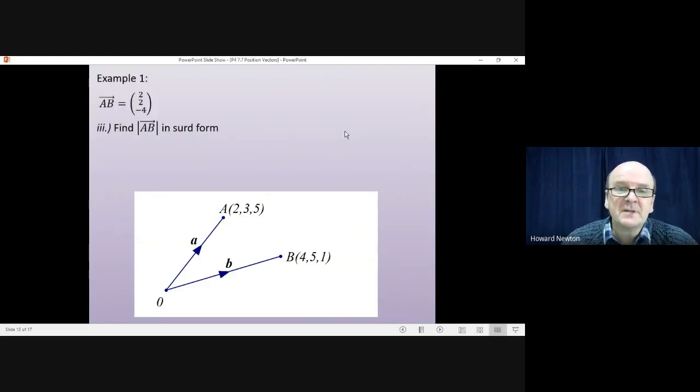And then lastly, we were asked to find the magnitude of AB, giving our answer in surd form. Sometimes they would say give the exact answer. If they say give the exact answer, they mean in surd form, leaving the square root. So the magnitude of AB is the magnitude of 2, 2, minus 4.